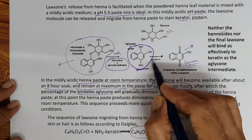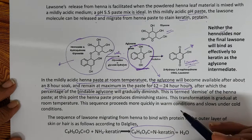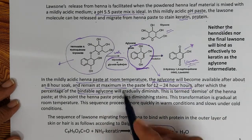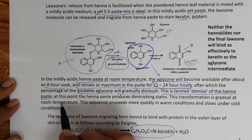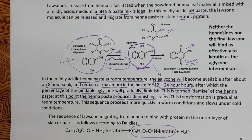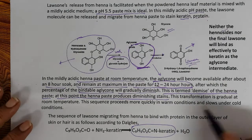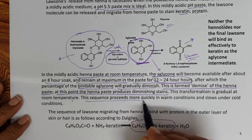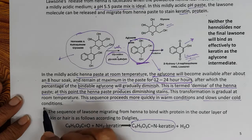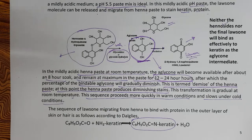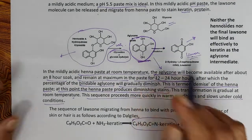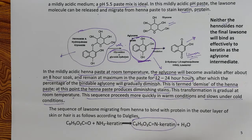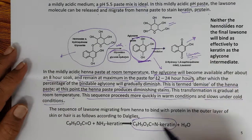After 12 to 24 hours the bindable aglycone — which binds to keratin and gets oxidized to lawsone — will gradually diminish. This process is termed the 'demise of henna paste,' at which point the paste produces diminishing stains; the color it can produce will diminish. This transformation is gradual at room temperature but proceeds more rapidly in warm conditions and more slowly under cold conditions.